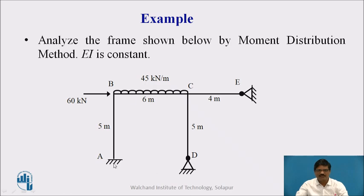In this figure, you can see members AB, BC, CD, and CE. We have hinge supports at D and E, and fixed support at A. The loading is a UDL of intensity 45 kN per meter and a point load of 60 kN at B.